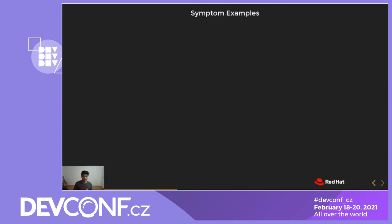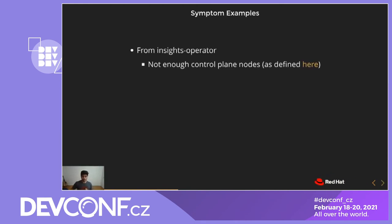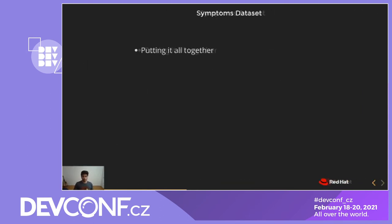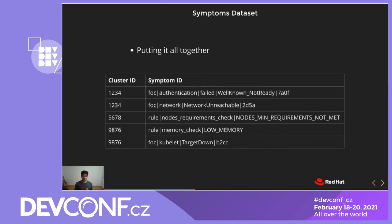Another example of a symptom might be that the insights operator running on your cluster realizes there are not enough nodes in the control plane. That information gets parsed and gets stored as a symptom ID, which shows that it's a rule type of symptom and that some specific rule is being broken. If you put all of this together, we get our main data set — a table that lists what cluster is showing what symptoms. This is our starting point for the project.